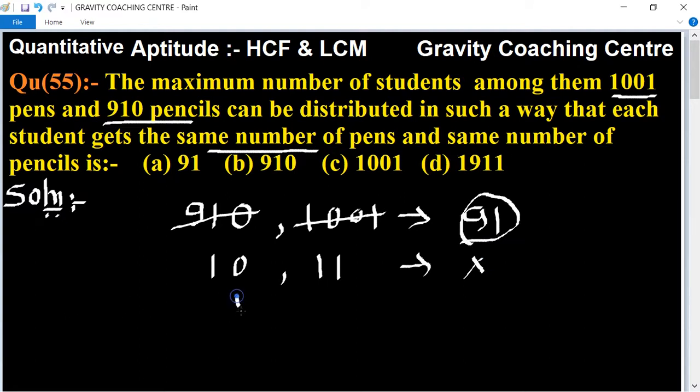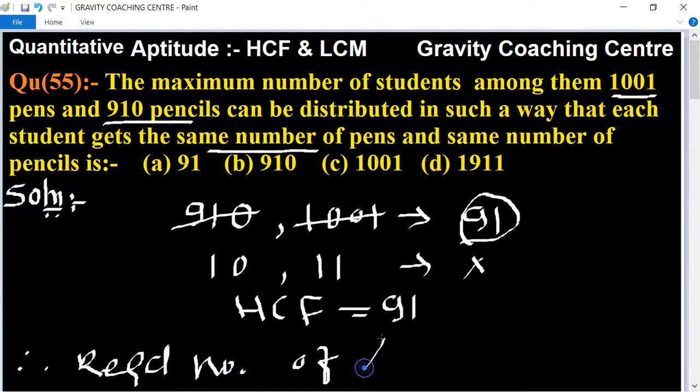91. HCF equal to 91. Therefore, required number of students equals 91. Answer, option A is the right answer.